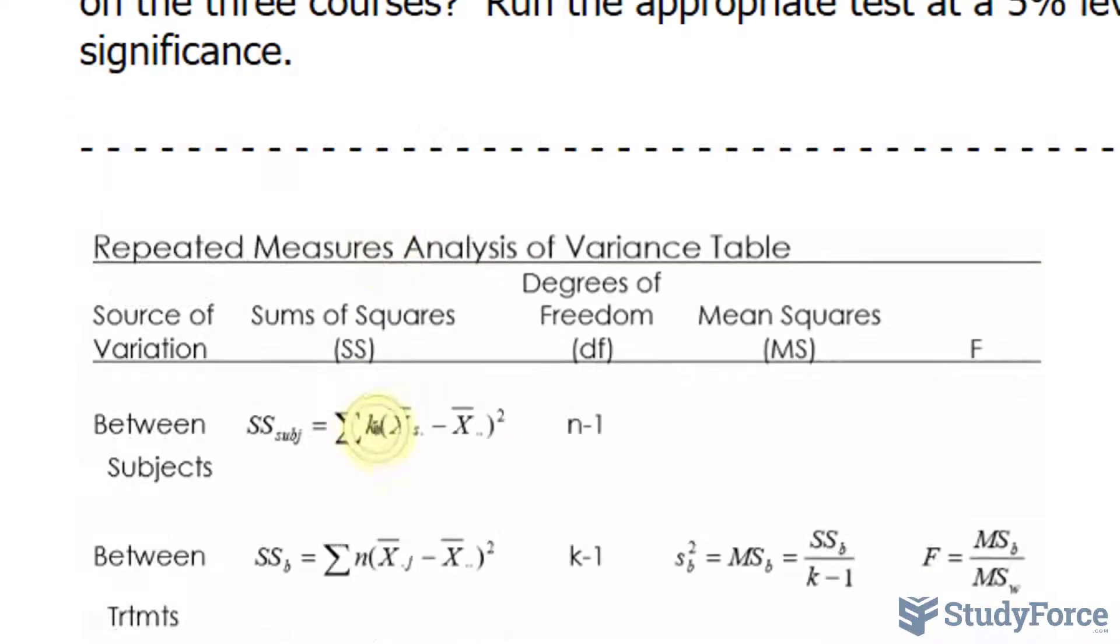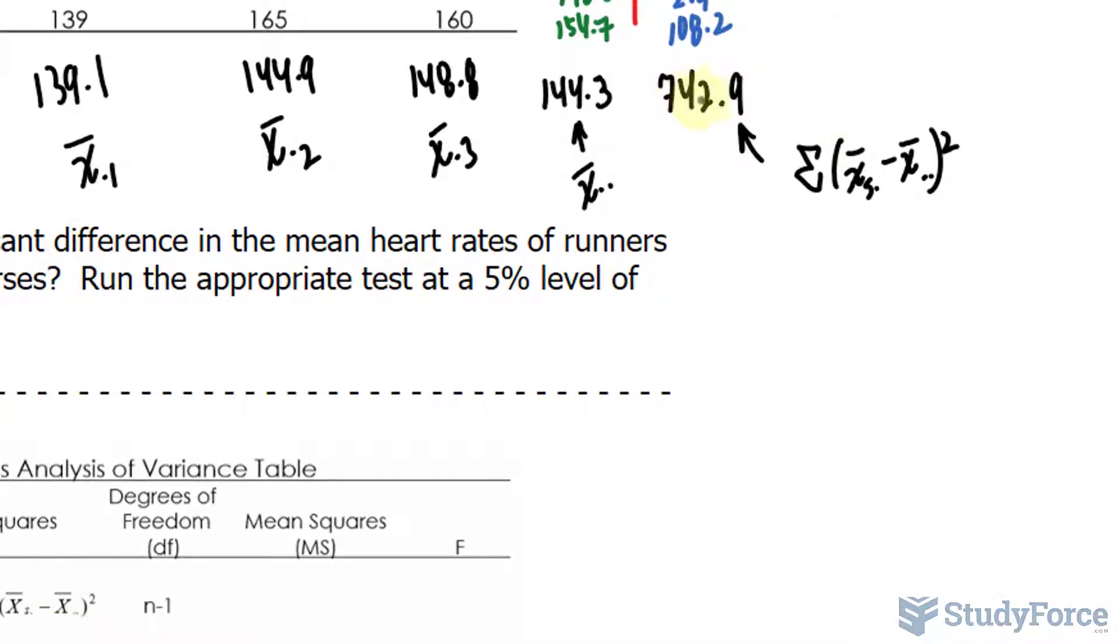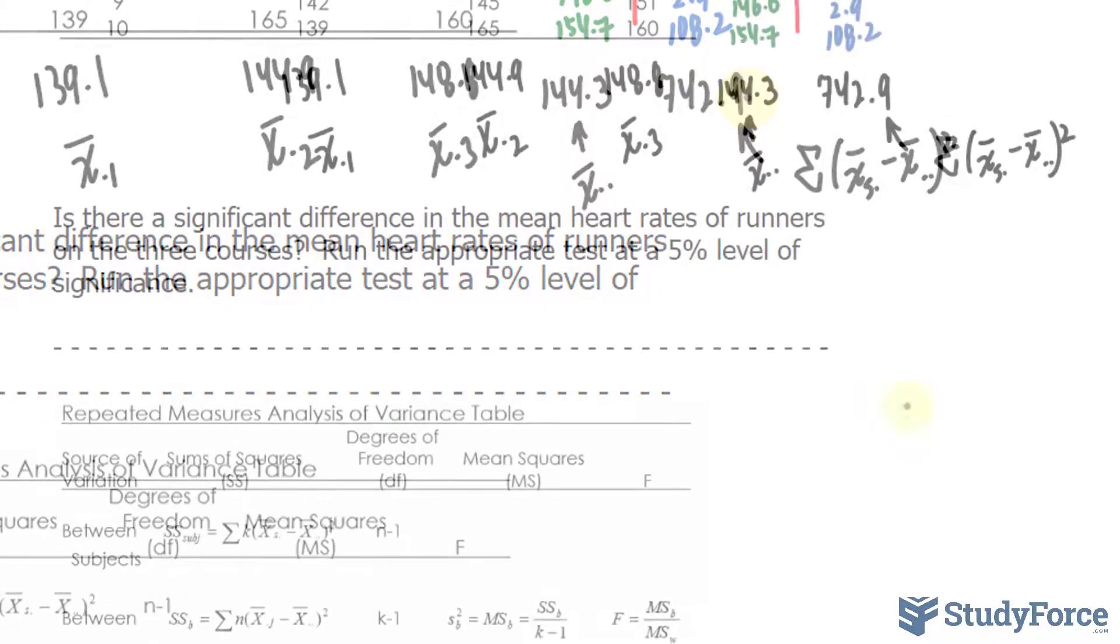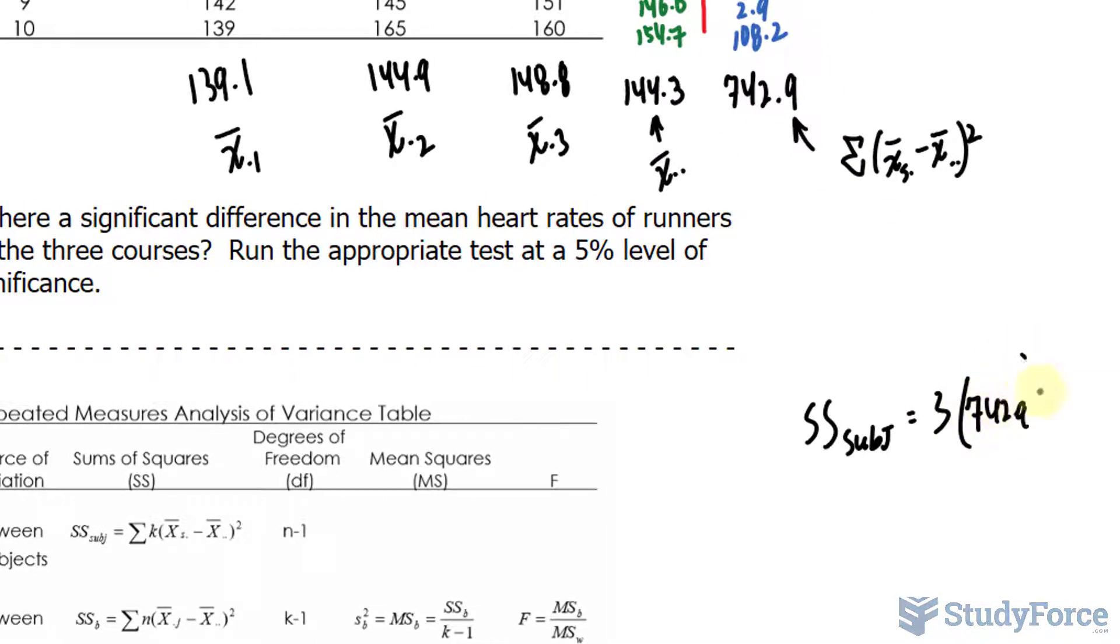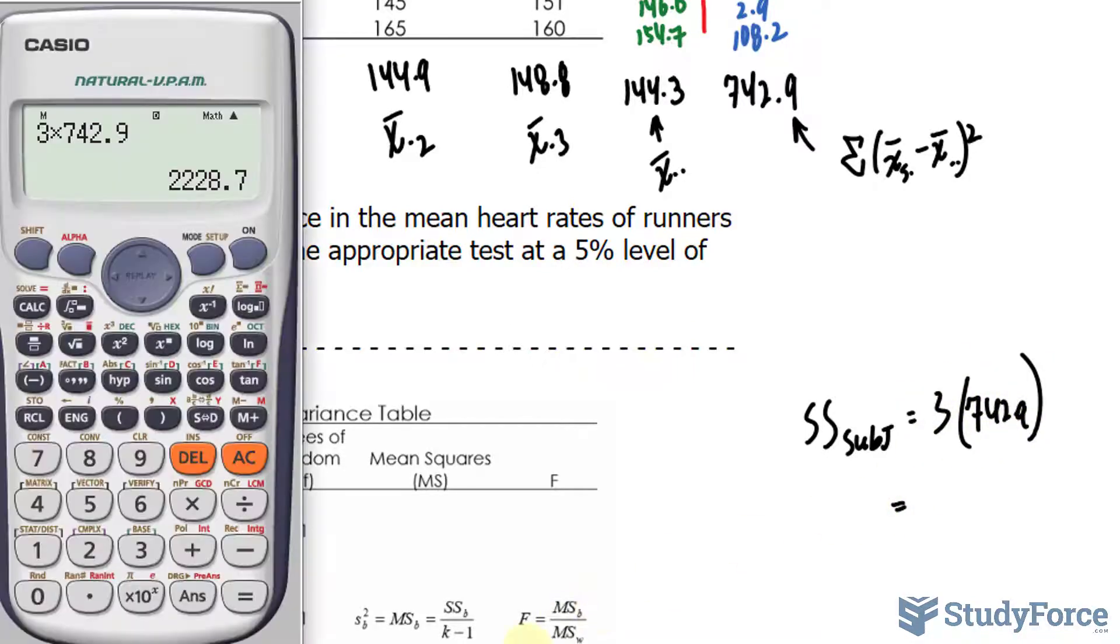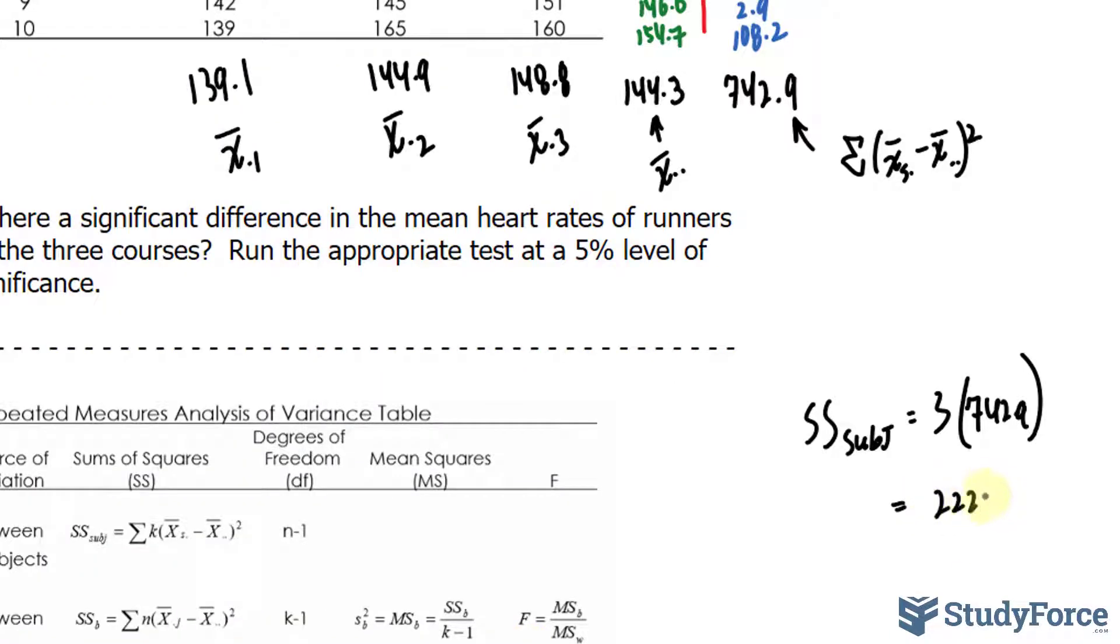From these values, we can now find the between subjects sum of squares. Let's go ahead and do that. The formula is K, which is the number of courses in this case, times this value, 742.9. SS subject is equal to K represented as 3, for those three courses, times the value right here, 742.9. Multiplying these two numbers in your calculator, it's shown on the screen as 2228.7. Make sure that you put that into the ANOVA table where this cell belongs.